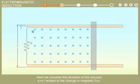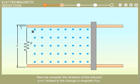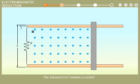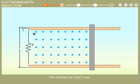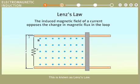Next, we consider the direction of the induced EMF related to the change in magnetic flux. The induced EMF creates a current, and the induced magnetic field of this current opposes the change in magnetic flux in the loop. This is known as Lenz's law.